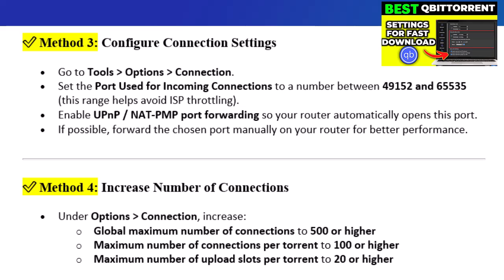Step 4: Increase Number of Connections. Under Options > Connection, increase the global maximum number of connections to 500 or higher, the maximum number of connections per torrent to 100 or higher, and the maximum number of upload slots per torrent to 20 or higher.